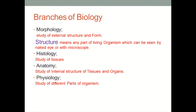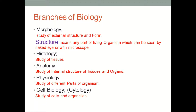Cell biology, also called cytology, is derived from the term cytoplasm. Cell biology is the branch of biology in which we study about the cell and its organelles. All types of living organisms are made of one or more than one cell, and cells are formed by different types of organelles. The branch of biology in which we study about cells and organelles is called cell biology.